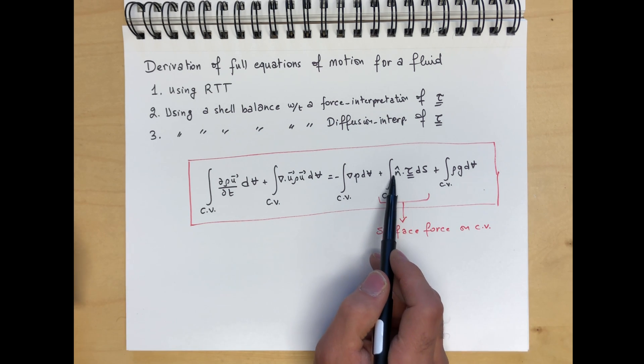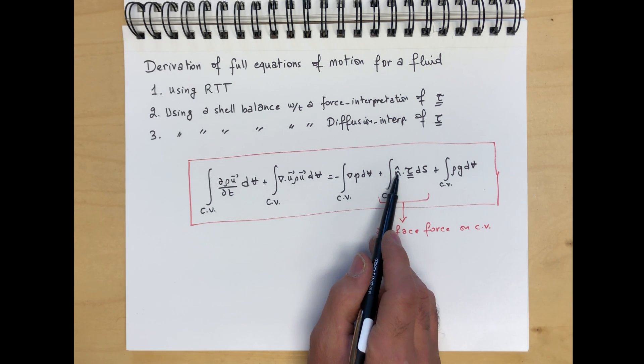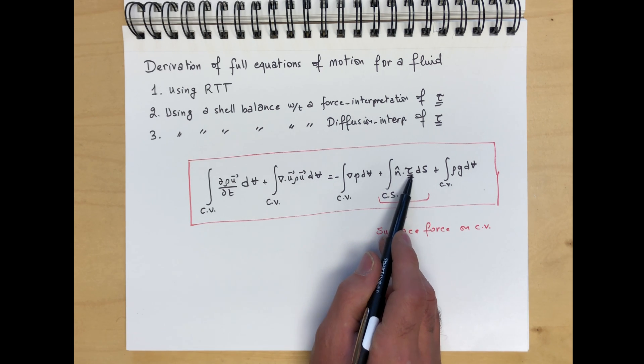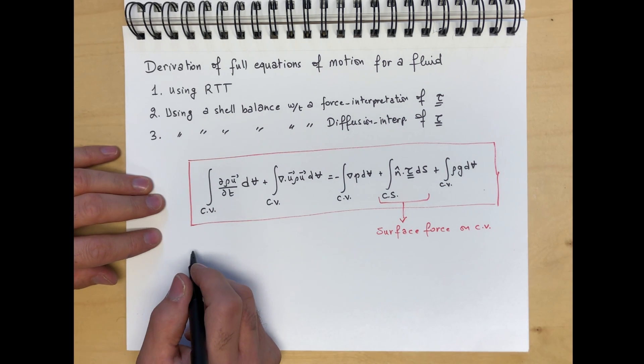If you're dotting with the i direction, for example, a face pointing in an x-face with an outward normal in the x-direction, you're going to get all the forces that act on the control volume in the x-direction. Then this would be 1, 0, 0, and dotting it with the stress tensor, the way we've been writing it, this will produce only the terms that are in the x-direction.